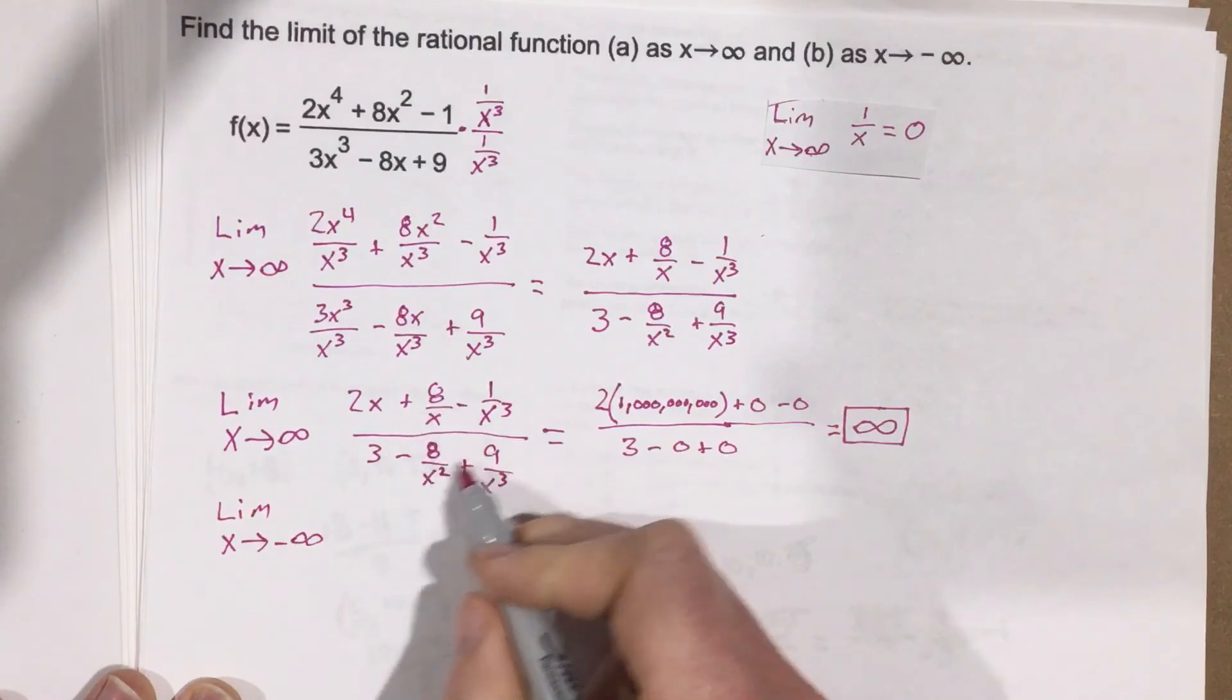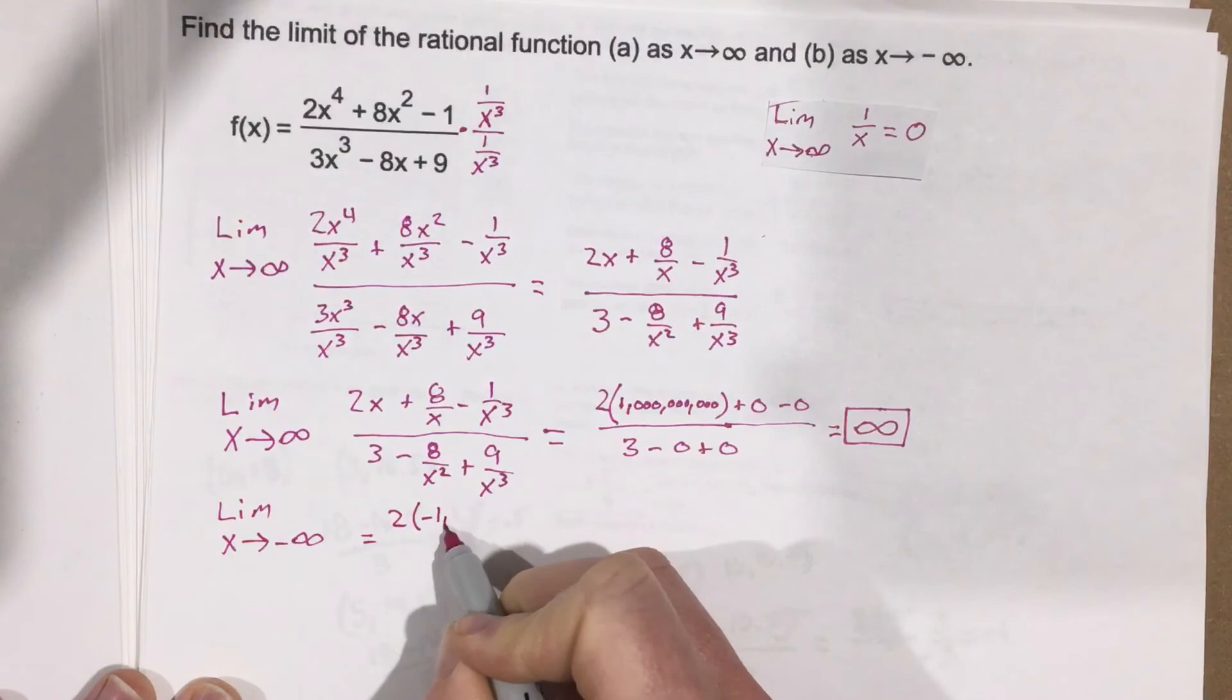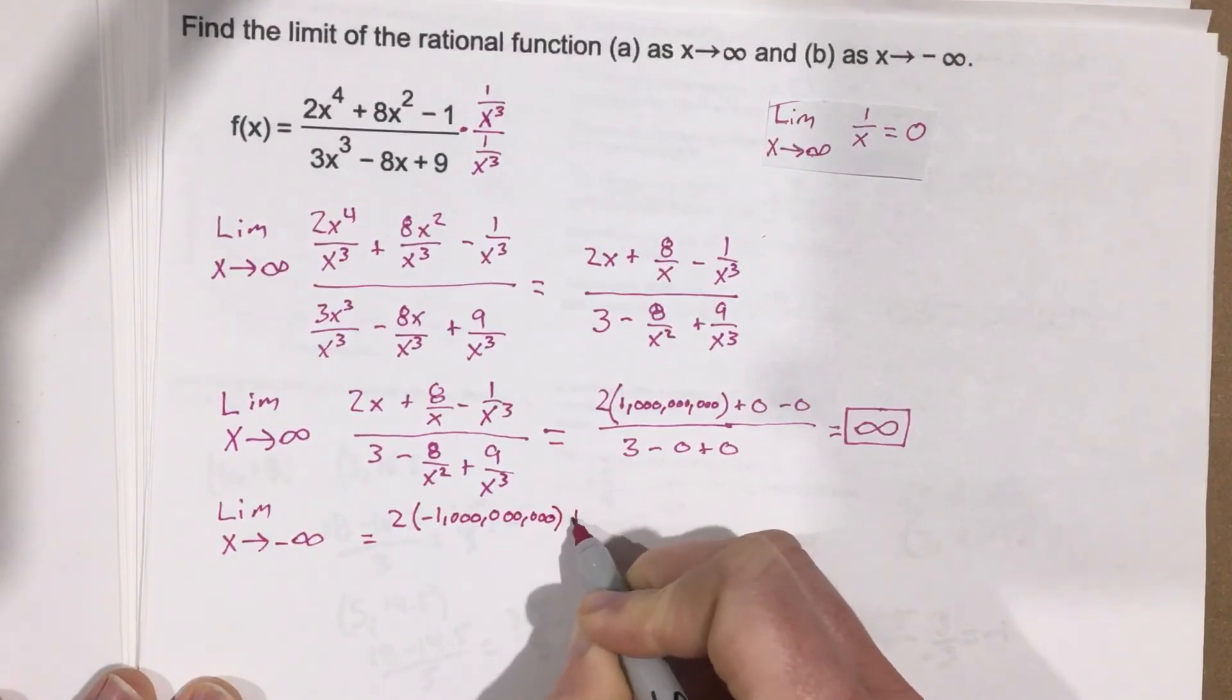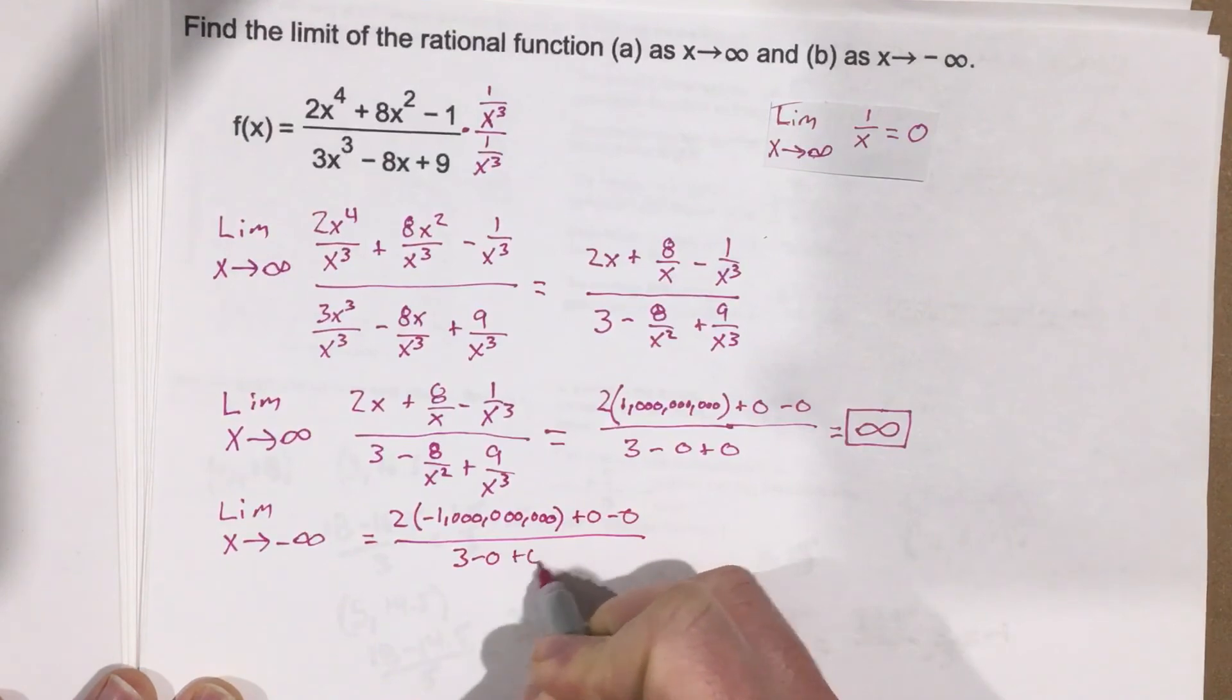let's just skip right to this step. So we'd have instead now 2 times negative a billion plus 0 minus 0, over 3 minus 0 plus 0.